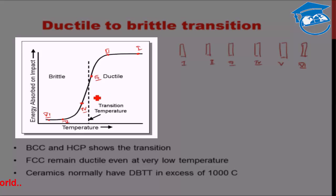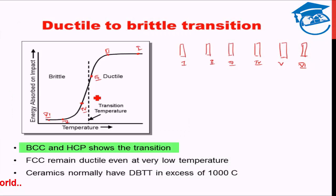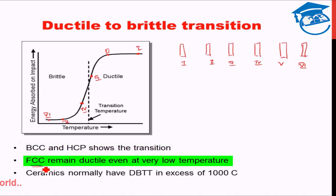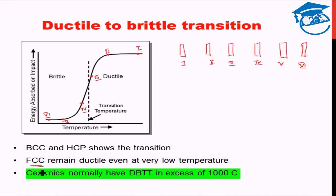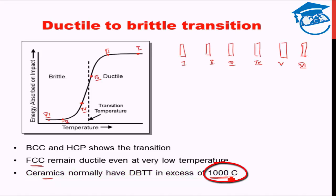Not all materials will have a ductile-to-brittle transition temperature. BCC and HCP materials show a ductile-to-brittle transition temperature, whereas FCC materials normally remain ductile even at very low temperatures. Ceramic materials have quite a high ductile-to-brittle transition temperature, around 1000 degrees Celsius or even more, which is why ceramics normally exhibit brittle failure.